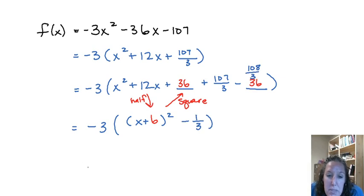And then our last step to get it in that form is to distribute our 3 back. Now we only have two terms. We've got our factor and then what was left over. So this is going to be negative 3 times our factor x plus 6 squared.